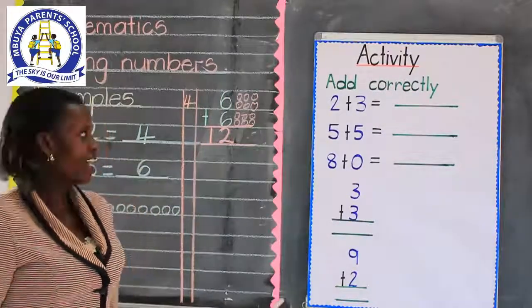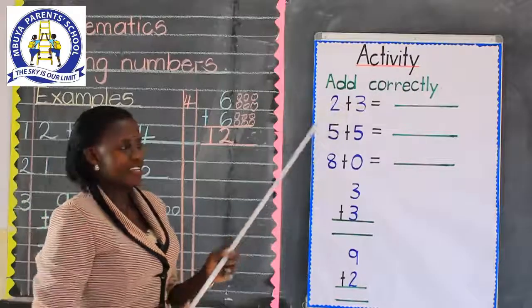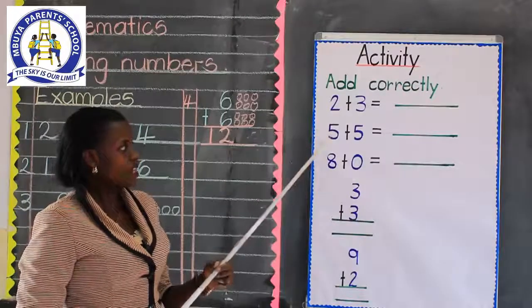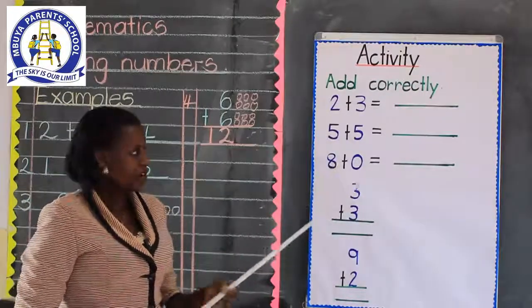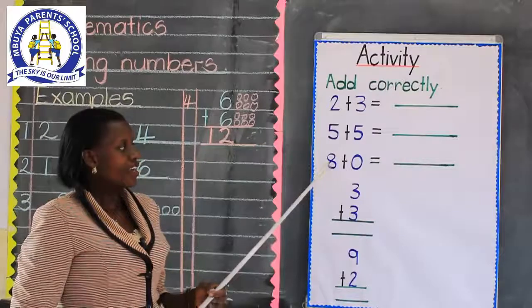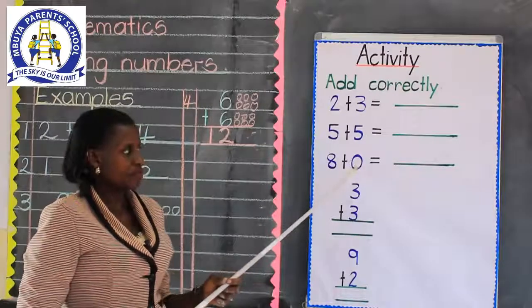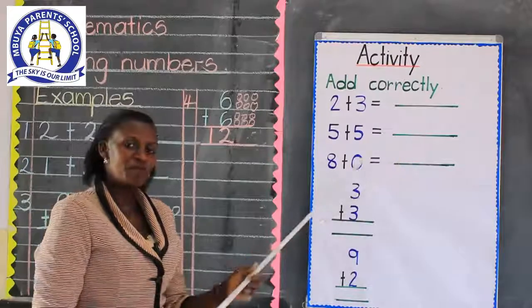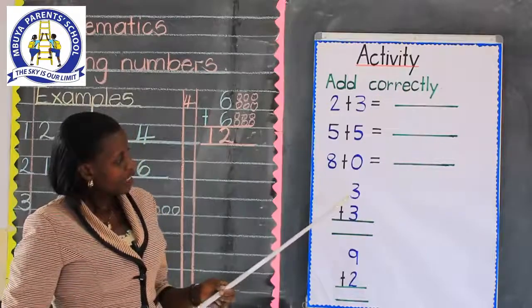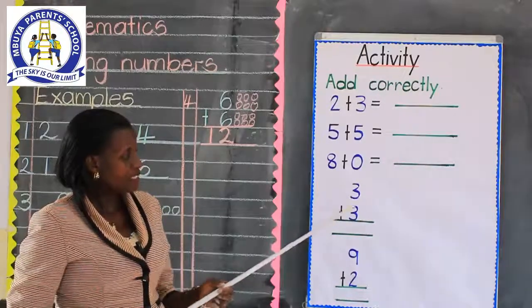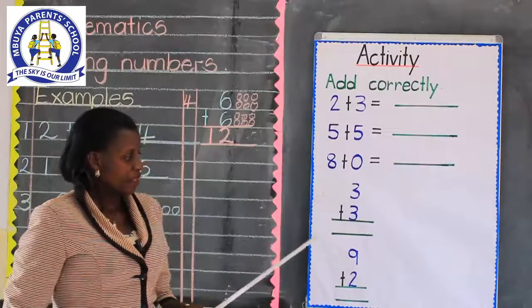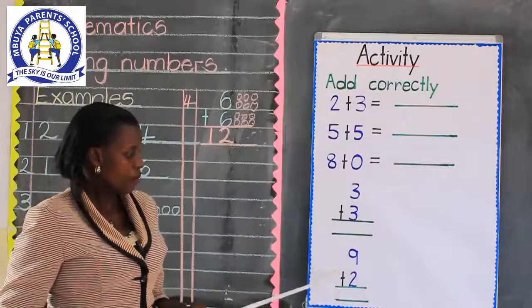Are we together? 2 plus 3. What do you get when you add those numbers? Another one is saying 5 plus 5. You write your answer here. Are we together? Then there is 8 plus 0. Write your answer in this space. Are we together, children? Then another number is 3 plus 3. What do you get as your answer? Then the last number is 9 plus 2.